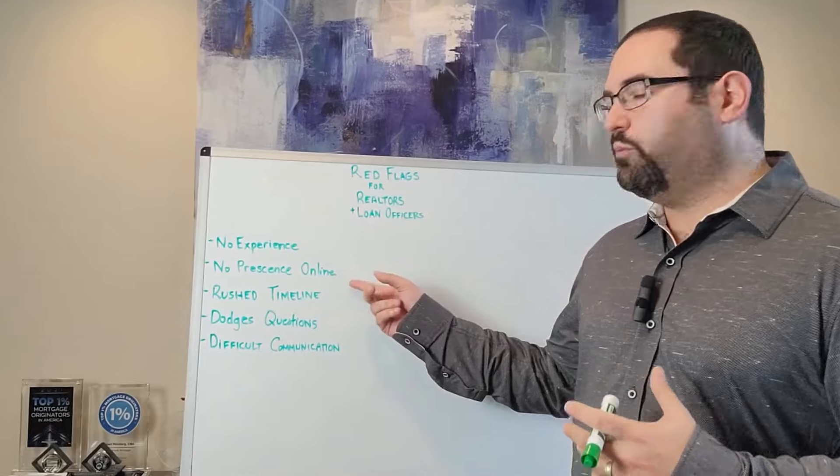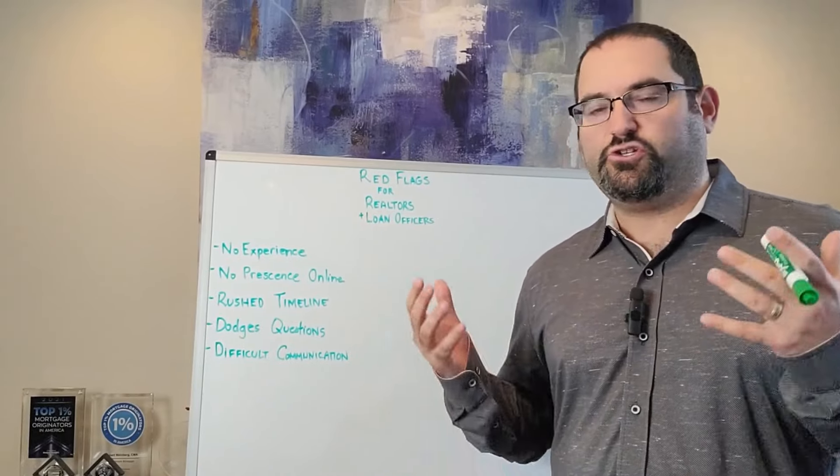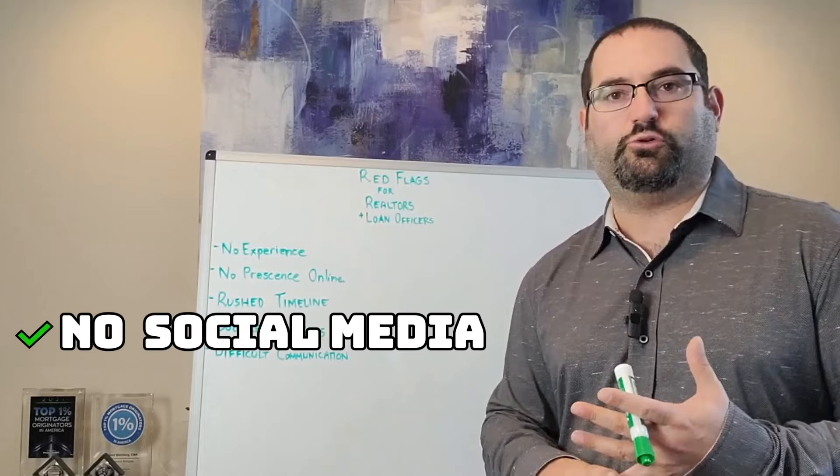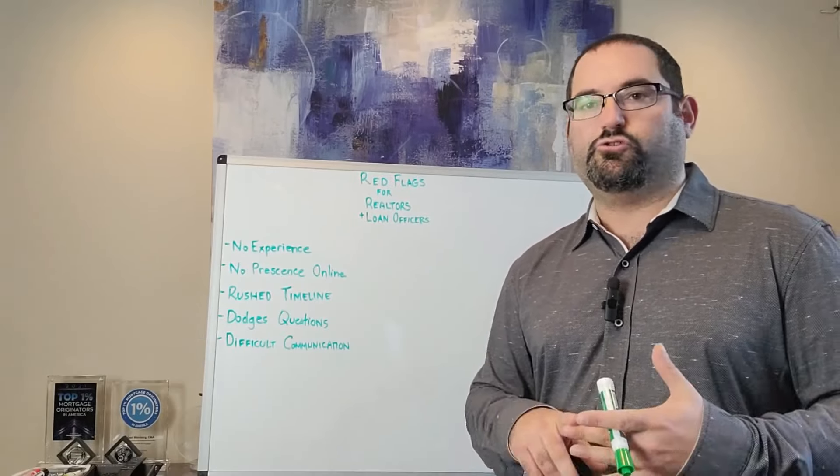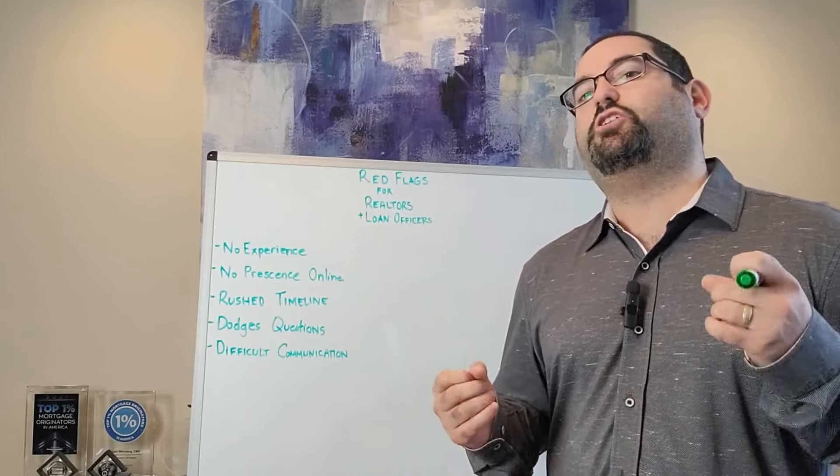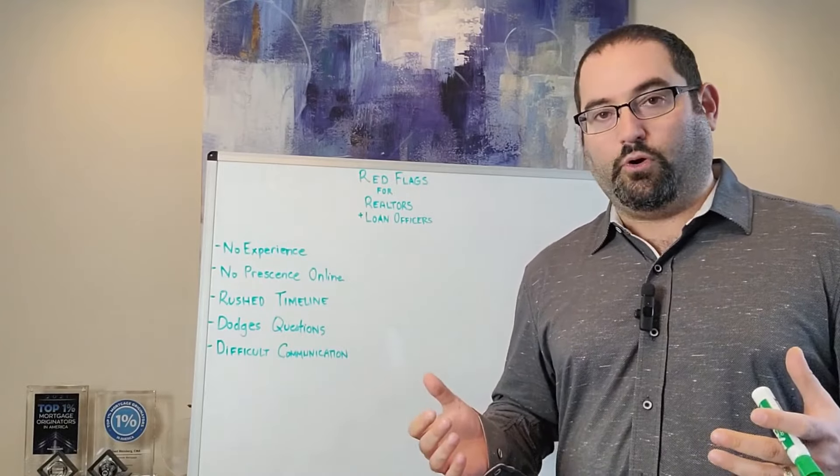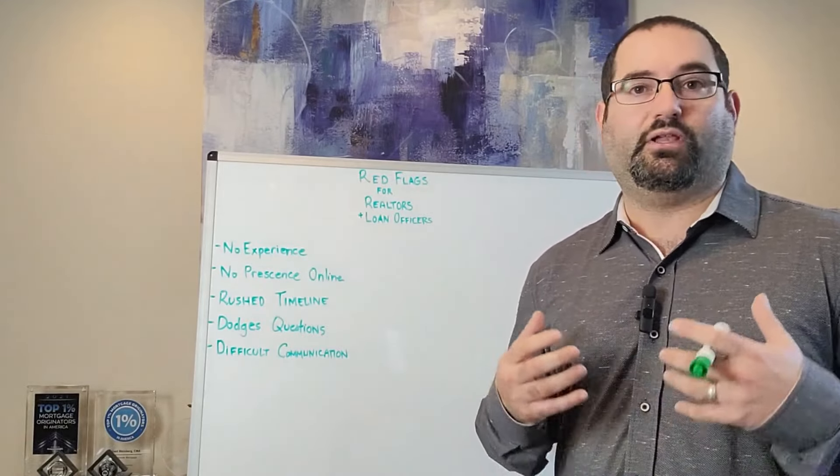The next red flag is if they have no presence online. So one of the things that you should be doing is when you're searching for a realtor and loan officer, you're going to be doing research. You're going to be finding people and looking at their references, reviews, and ratings online to see who's the best person for you.